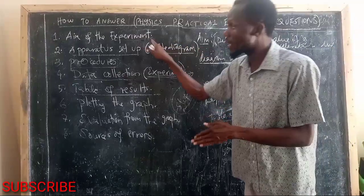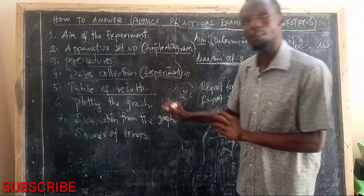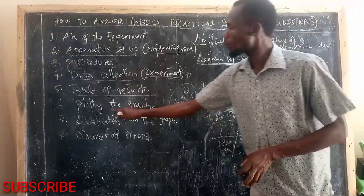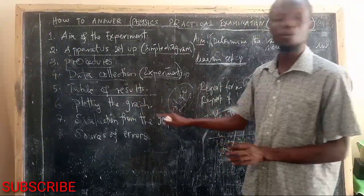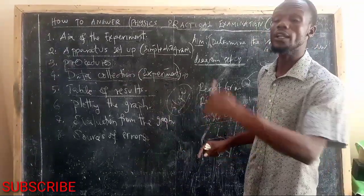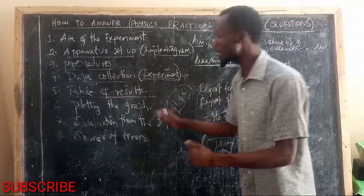Kwa hiyo ndivyo unavyojibu. Kwa utaandika, aim of the experiment, apparatus set up, procedure, data corrections, table of results. Ambapo utachora jedwali lako, plotting the graph. Now, the graph was plotted. Manake, the graph was plotted on the graph paper. Kwa hiyo uta represent the graph.